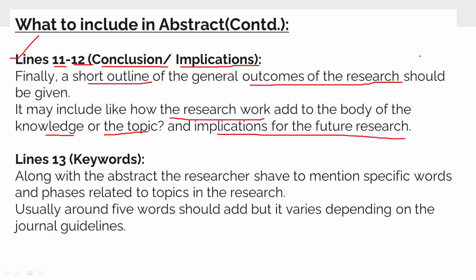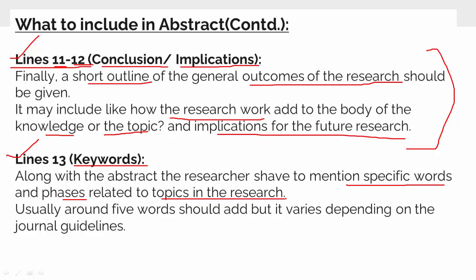So by using this blueprint in 12 lines, you can go ahead and write your abstract. The last line of your abstract will be your keywords. Along with the abstract, you should mention specific keywords or phrases related to your topic. Generally, you are supposed to give 5 keywords for every paper, but you can confirm this through your journal guideline.